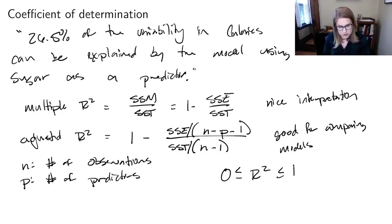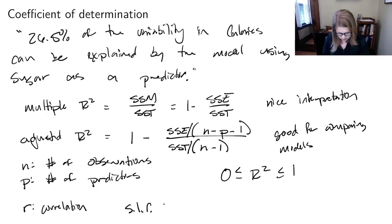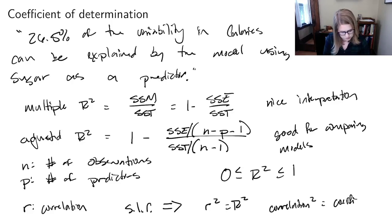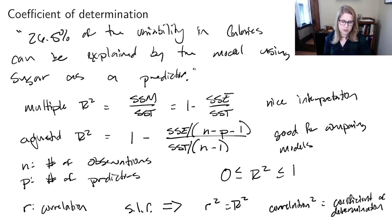You may remember from intro stats that little r is the correlation. For simple linear regression, you can square little r to get big R squared — the coefficient of determination. But that only works for simple linear regression; it does not work for multiple linear regression because you can't compute the correlation between more than two variables.